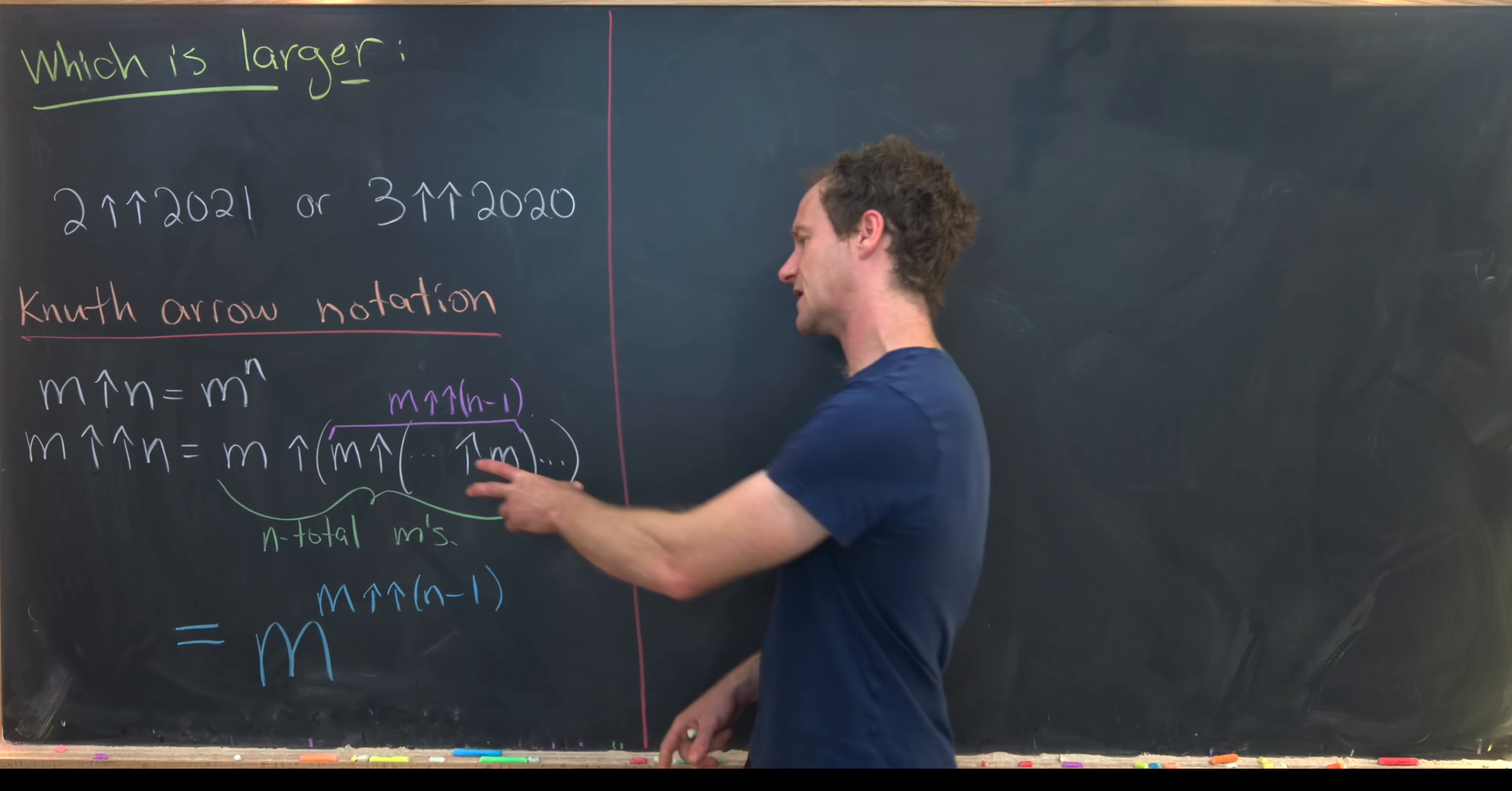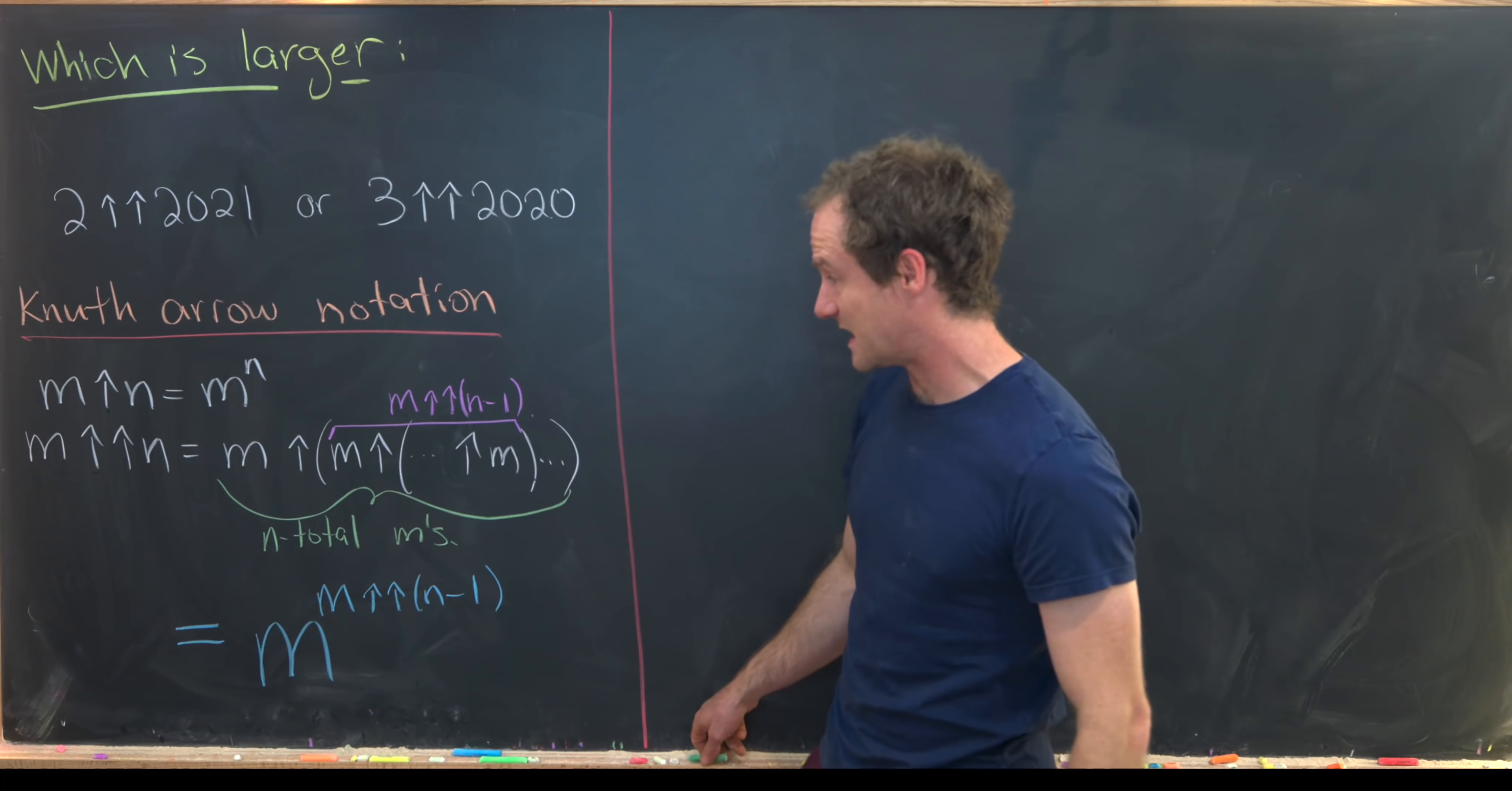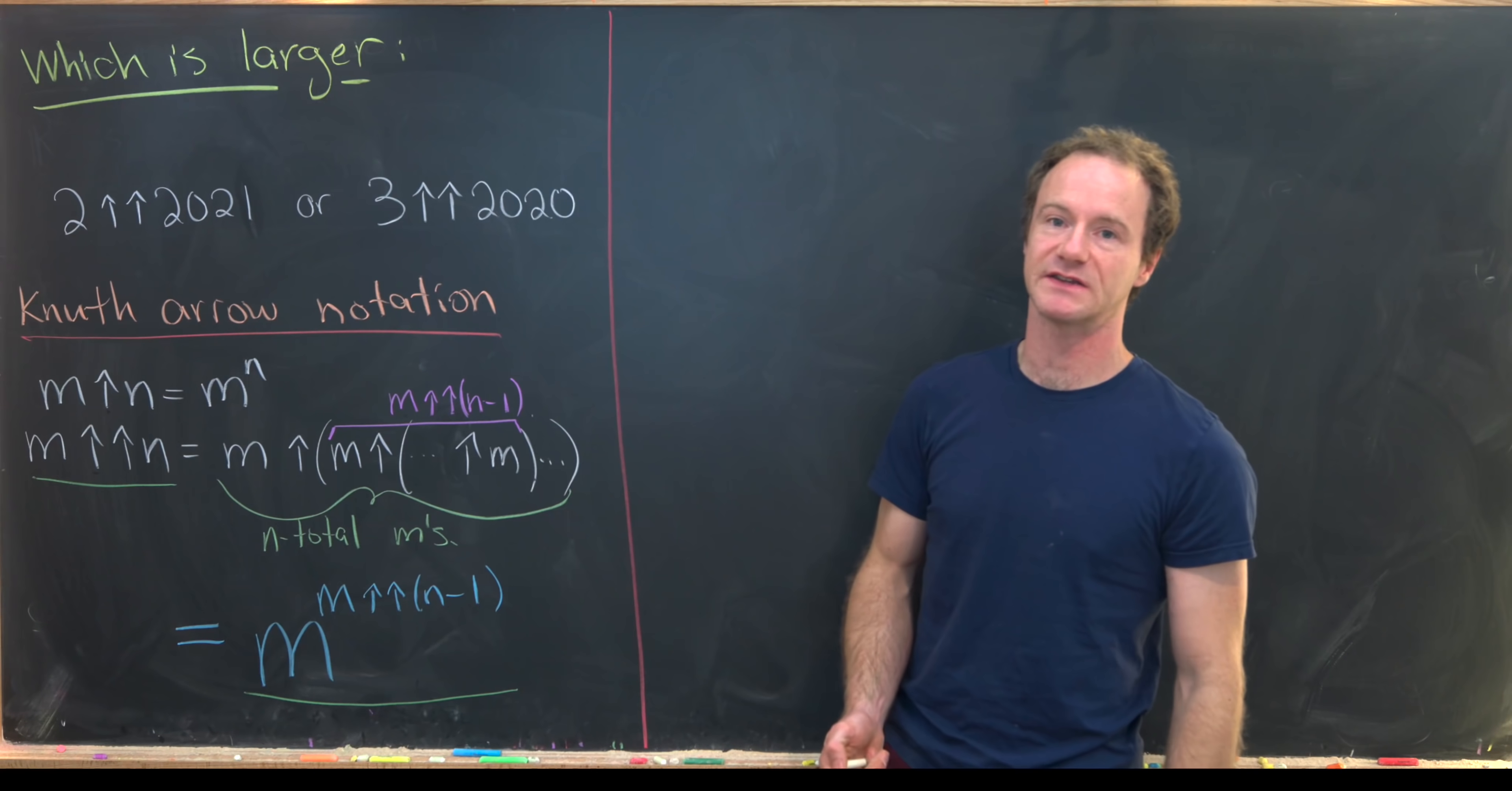But now let's notice that we can collapse all of these n minus 1 m's into an m double up arrow n minus 1. So that means that in the end we have m double up arrow n is the same thing as m to the power of m double up arrow n minus 1.